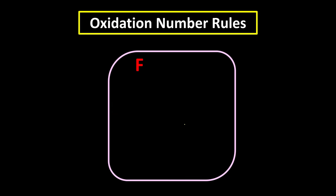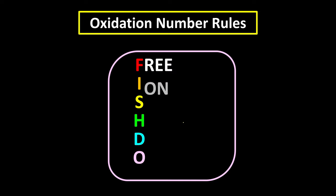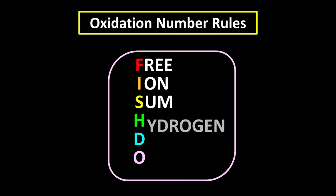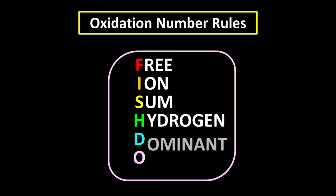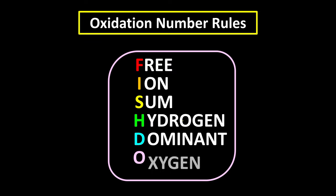I will call this as FISH DO. F means free, I means ions, S means summations, H for hydrogens, D for dominance, and O for oxygens.